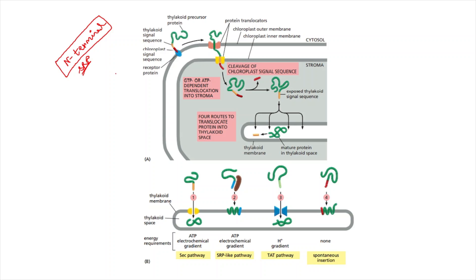Every protein translocating into the mitochondria, chloroplast, or endoplasmic reticulum will contain a particular N-terminal signal sequence. Now, unlike mitochondria which has only one N-terminal signal sequence, in chloroplast you have another sequence after the N-terminal signal sequence, which is called the thylakoid signal sequence. The red portion in this picture is the N-terminal signal sequence, and after it you have a yellow portion, which is the thylakoid signal sequence.